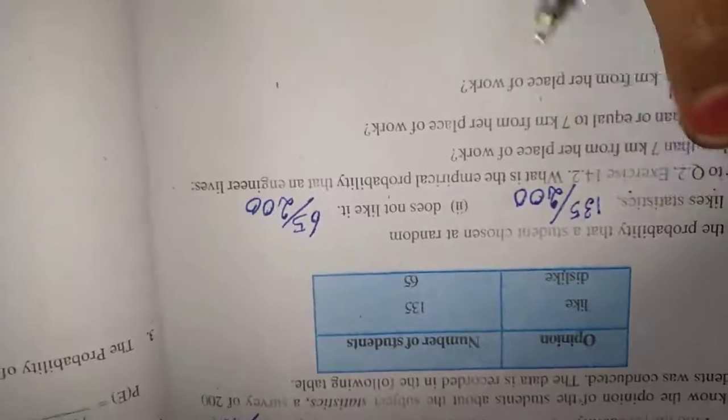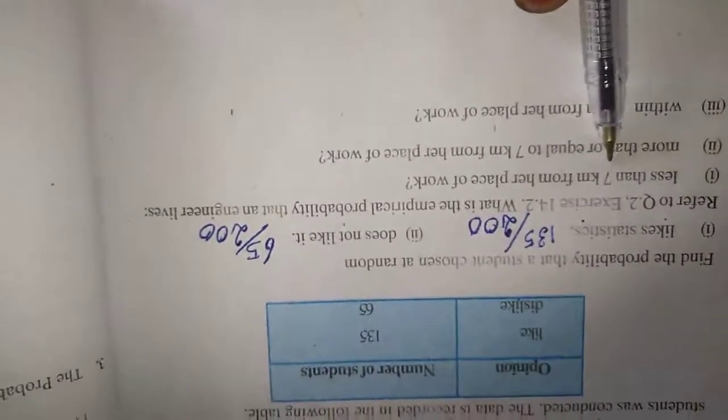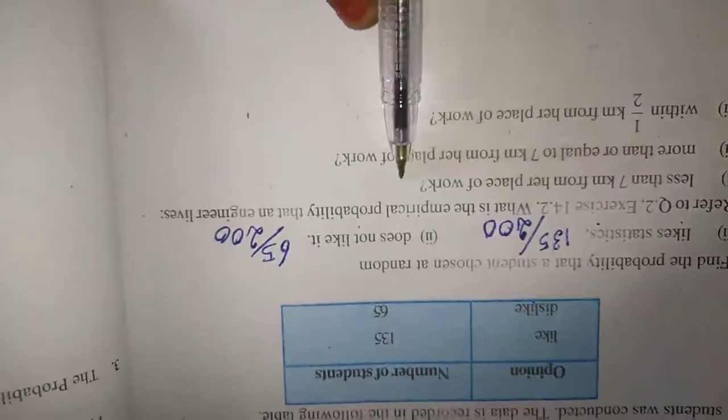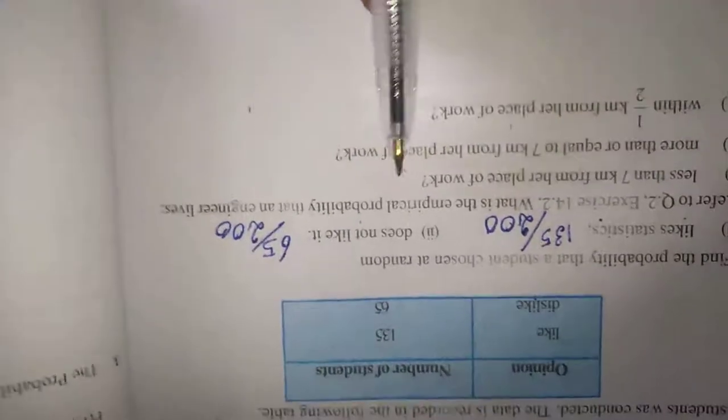Next question. This also we want to refer exercise 14.2 question number 2. I will explain the question first. Less than 7 kilometers from her place of work. We will refer that question. They told about this question only. Here, 40 engineers. We have to find less than 7 kilometers from her place.